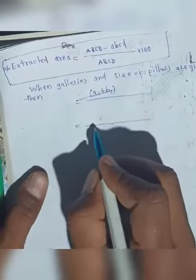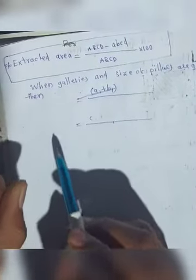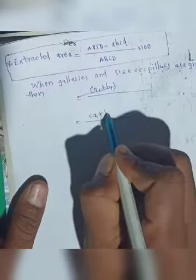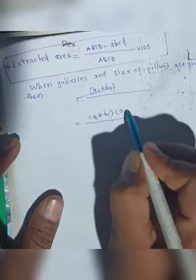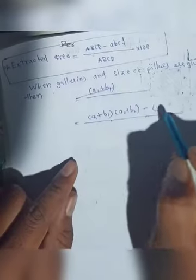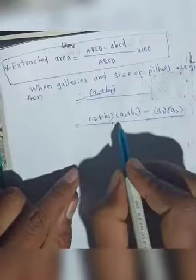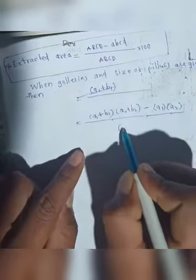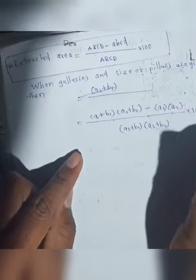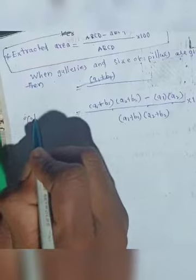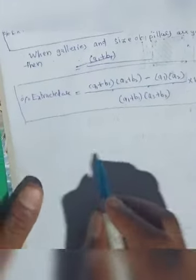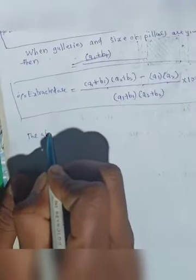The area of capital ABCD: one side is a1 plus b1 and another side is a2 plus b2. The area of small ABCD: one side is a1 and another side is a2. So the formula becomes: (a1 plus b1) times (a2 plus b2) minus (a1 times a2), all divided by (a1 plus b1) times (a2 plus b2), into 100.